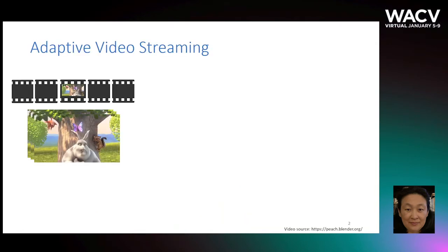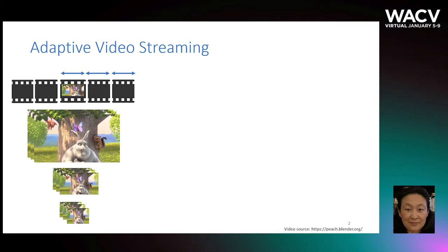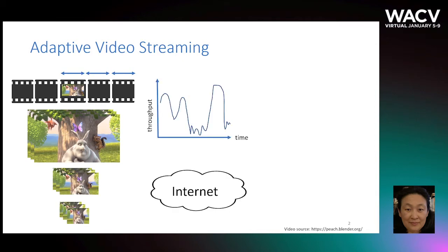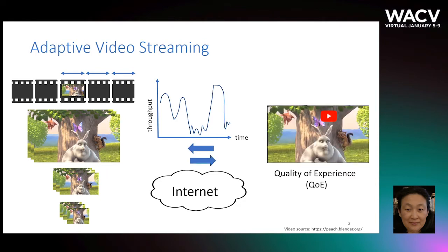Most adaptive video streaming techniques first encode a video into multiple chunks of a fixed duration called a segment, and encode video at multiple bitrates. Then it delivers the video segment at a rate that best matches the network conditions. The goal is to maximize the user viewing experience such as high bitrate, low buffering time, and smooth playback across the segment.